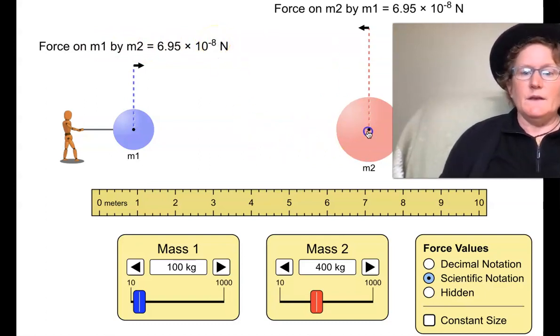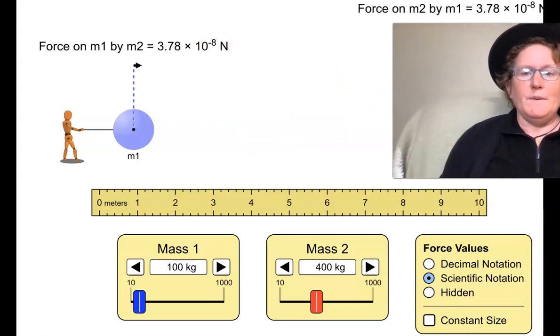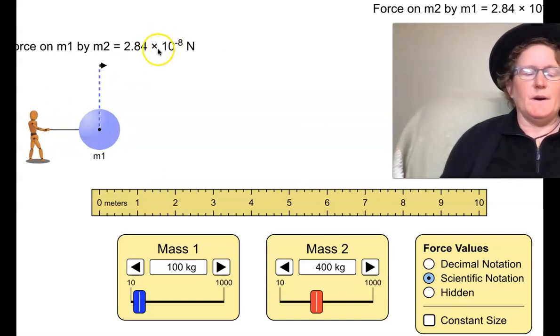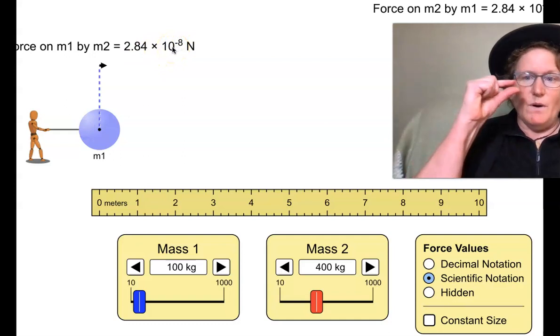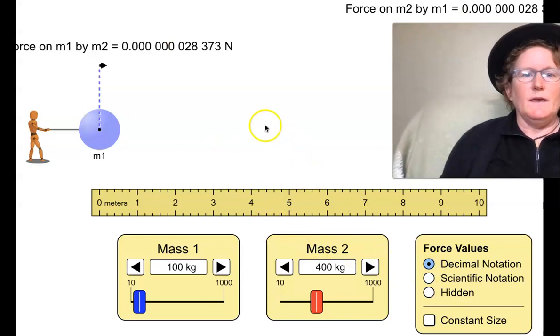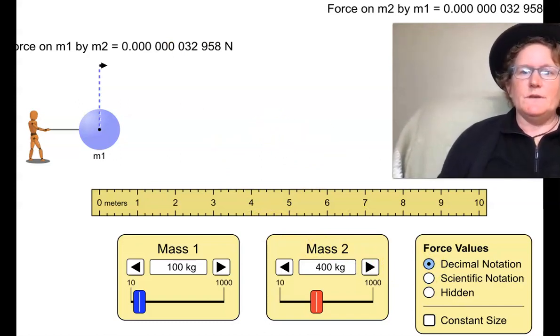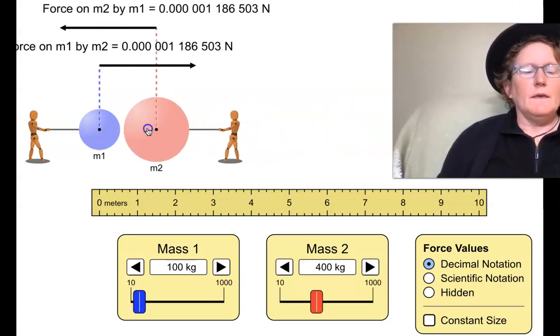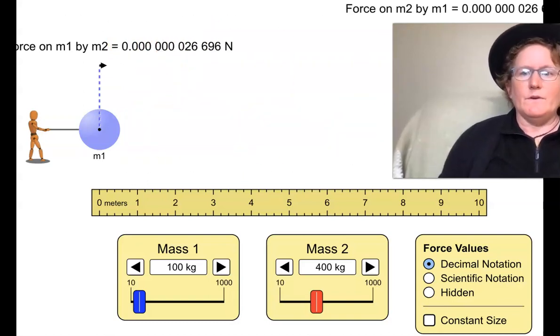So let's look at what happens to the force of gravity as we move those objects apart. It's 10 to the negative eight, which is a smaller number. You can look at decimal notation if scientific notation is confusing. Watch how the number changes and how the arrow changes here if we move them closer together or further apart. It gets really tiny if they're very far apart.